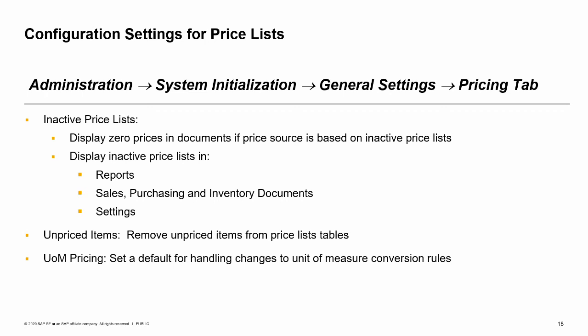You also have the option to hide or display inactive price lists in three areas: in reports, in sales, purchasing and inventory documents, and in settings. Each area has a checkbox that when checked tells the system to display inactive price lists for that area. Some companies may have a large number of unpriced items that are neither sold nor purchased. Because every item by default appears on every price list, companies with a large number of items may wish to remove unpriced items from price list tables. By selecting this checkbox, all items with zero price will be immediately removed from the items table, ITM1, substantially reducing the size of this table and improving performance. Be aware that this action is not recorded in the log file since there are no price changes. If the checkbox is subsequently deselected, all the removed items will be restored to the ITM1 table.